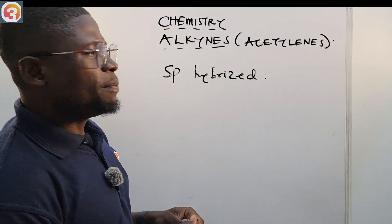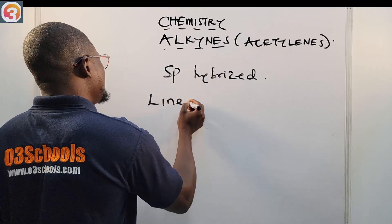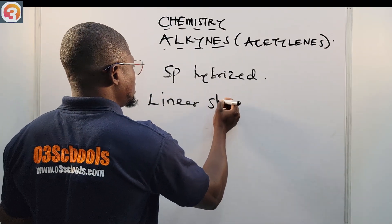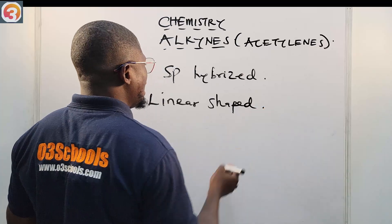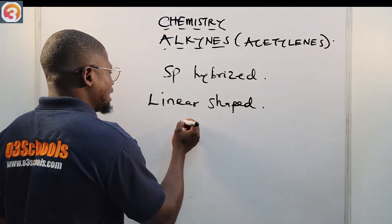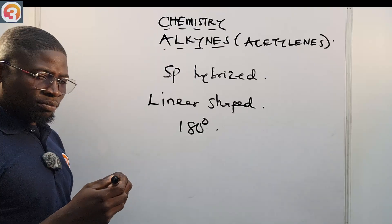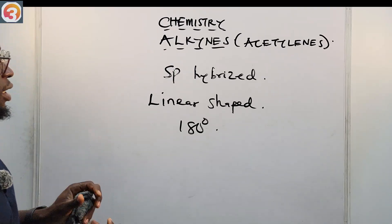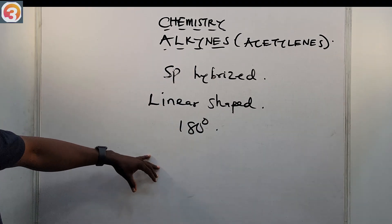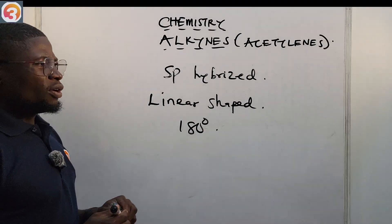What is the shape of alkynes? Alkynes have a linear shape. They are linear-shaped. And the bond angle in alkynes is 180 degrees. Take note of that — they are linear-shaped having a bond angle of 180 degrees.